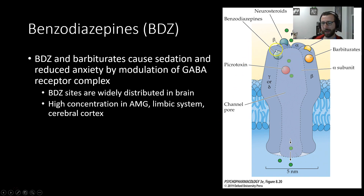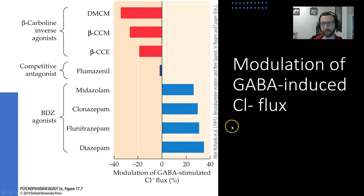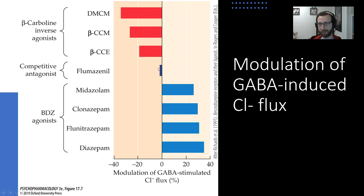Benzo-class drugs make these GABA receptors more efficient — they allow more chloride to pass through the channel when GABA binds. Looking at various classes of drugs and their impact on chloride flux: inverse agonists move chloride flux in a negative direction; competitive antagonists at the allosteric binding site do not activate the receptor or meaningfully alter chloride flux; benzo-class agonists bind to the allosteric binding site and enhance chloride conductance. When these benzo-class drugs are present alongside GABA-stimulated chloride flux, we see more chloride moving through the channel.